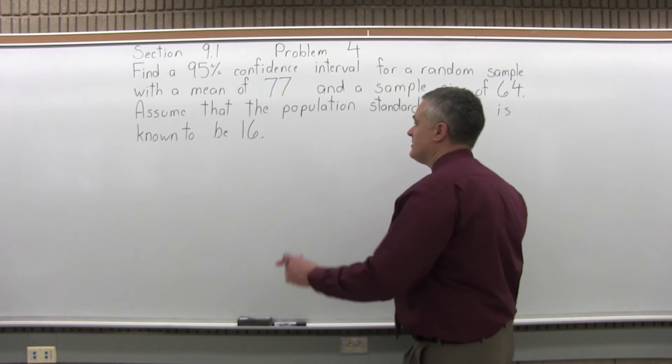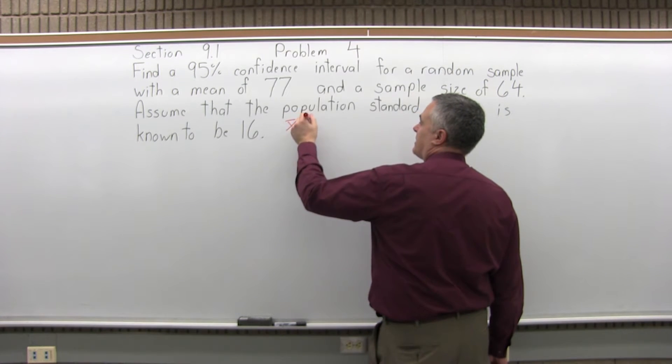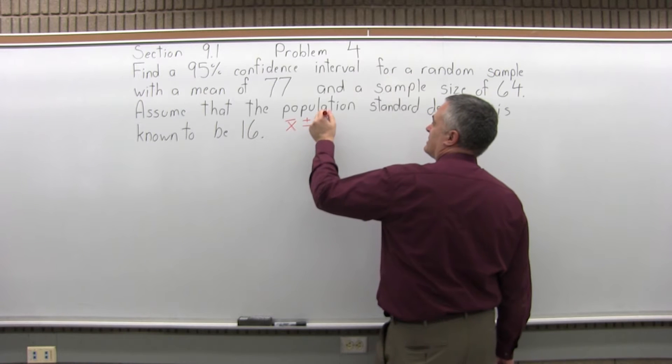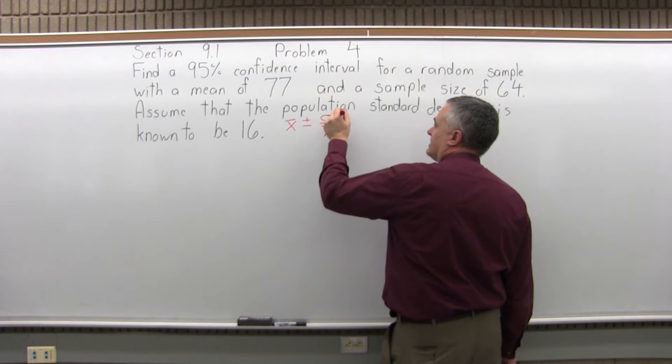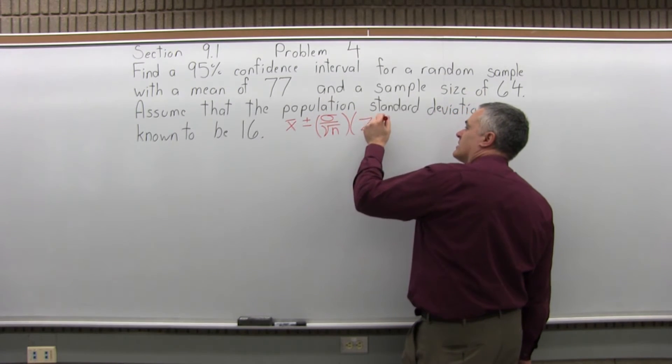So the problem is asking us for a confidence interval. So we will use the confidence interval formula, which is x-bar plus or minus sigma, the standard deviation, over square root of n, the sample size, times z sub c, the confidence coefficient.